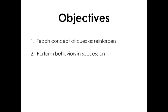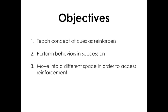We're going to teach the dog to perform behaviors in succession. Performing different behaviors in succession increases the cognitive load. It makes doing things harder, so we need to account for that when we make our training plans. We're going to teach the dog to move into a different space in order to access reinforcement. And we're going to design specific behavior chains to fill in those gaps.